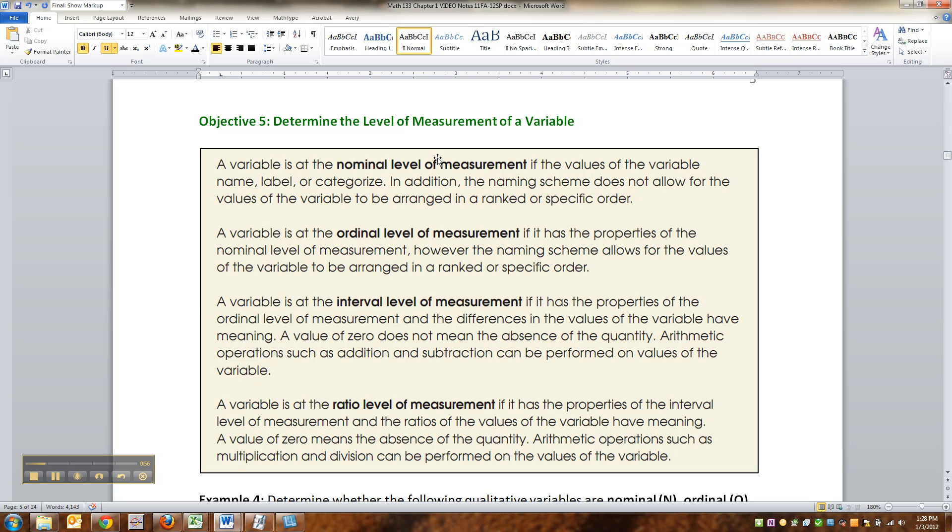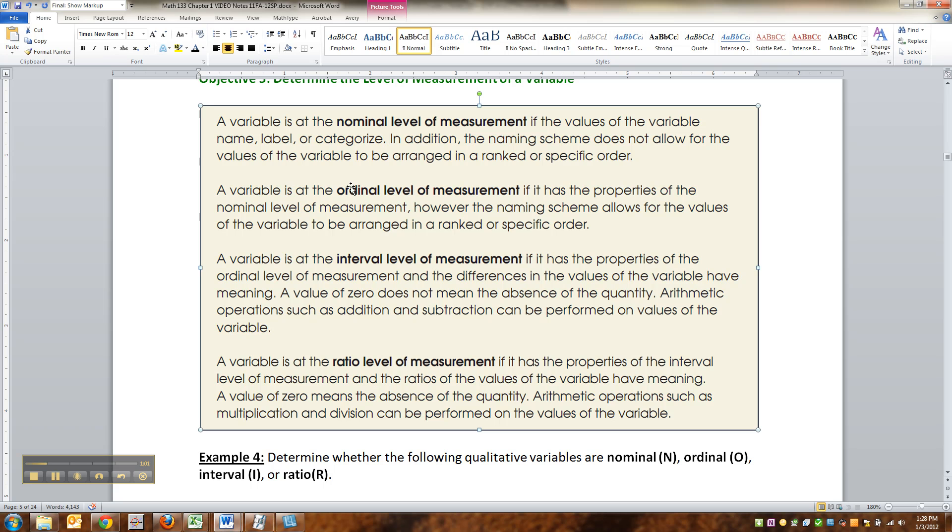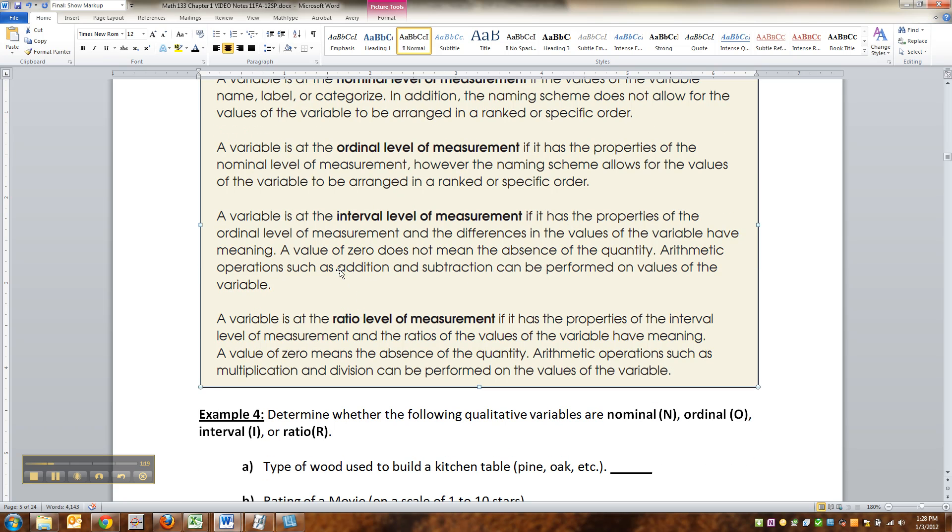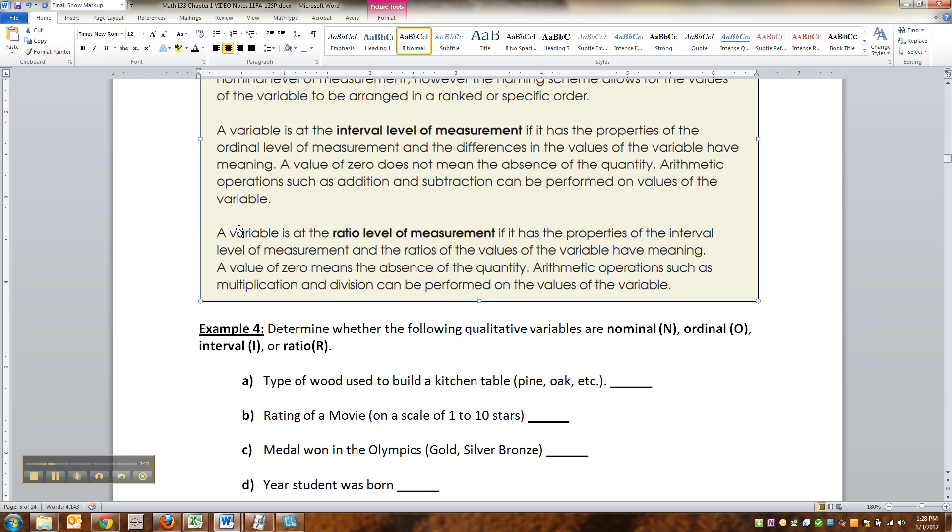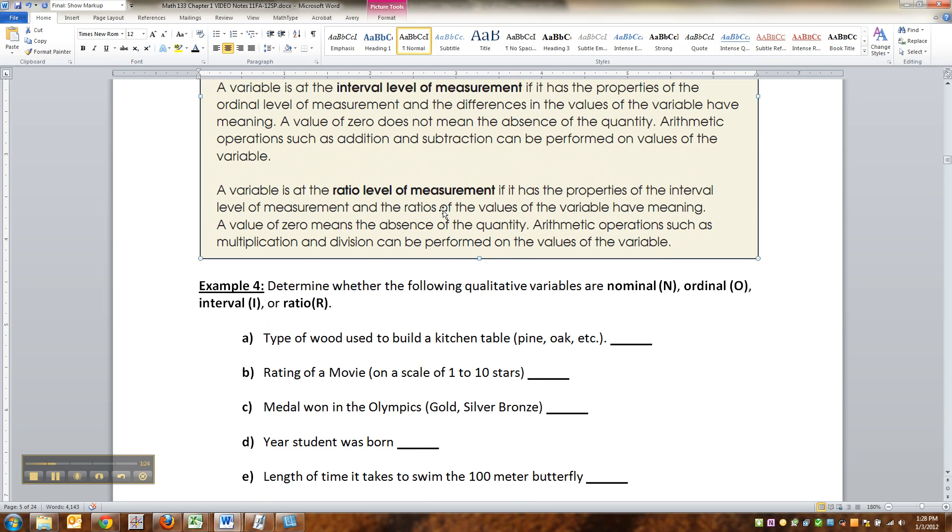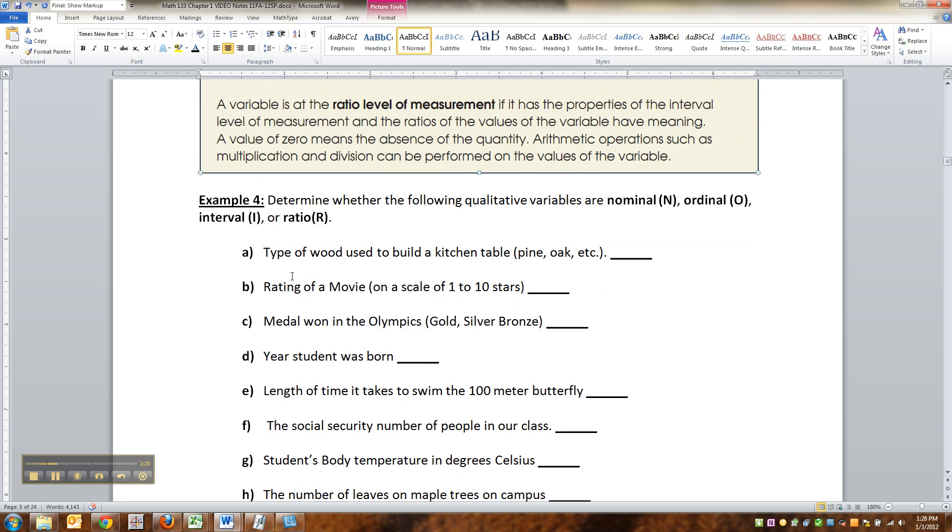Nominal is categories. Ordinal is categories, but they're categories with an order to them, so you can be ranking them. Interval are values that are quantitative. They have ordinal level of measurement, but they have a zero that does not represent the absence of a quantity. In other words, you can get lower than zero. And then ratio means that zero is as low as you can go. The value of zero means the absence of the quantity.